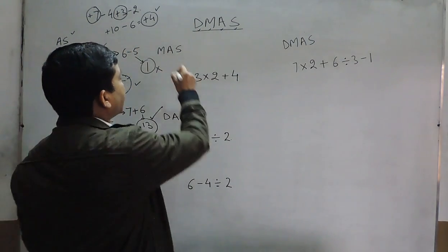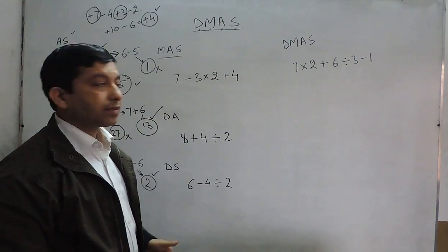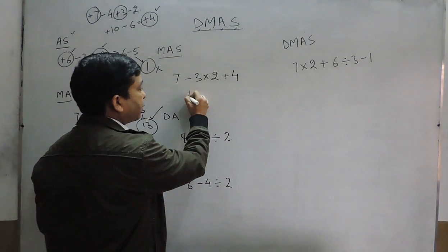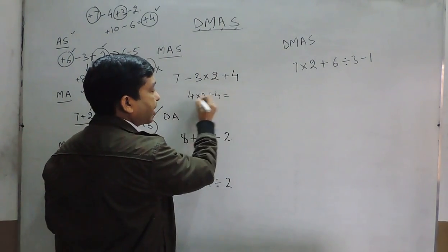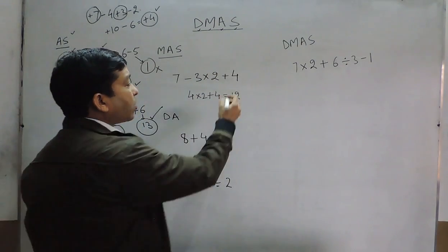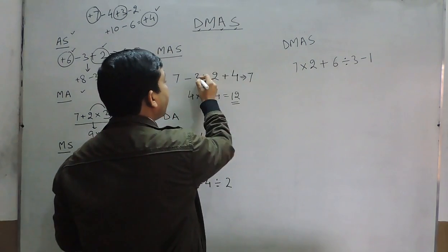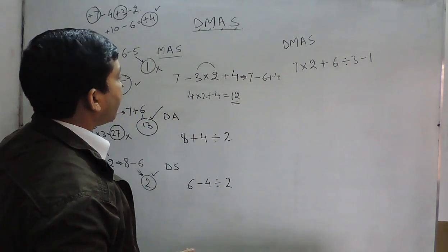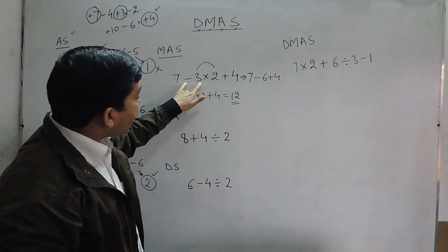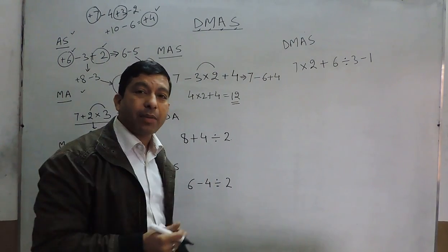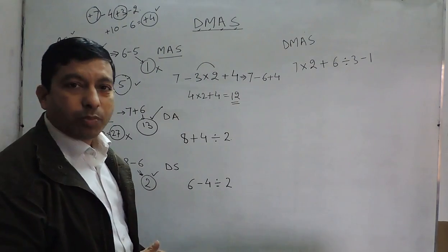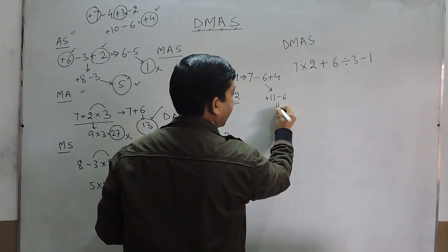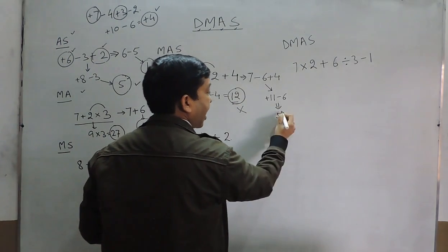For a full MAS example — multiplication, then addition, then subtraction — some students solve 7 minus 3 first to get 4, then 4 times 2 plus 4, arriving at 12. But the correct formation is: first multiply to get minus 6, then add plus 4, giving 7 plus 4 equals 11, minus 6, which equals 5. So 12 is the wrong answer and 5 is correct. Minus can be multiplied by a positive number, but in addition, minus cannot be added directly to a positive number.